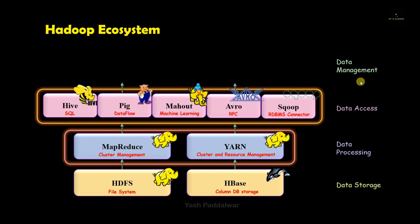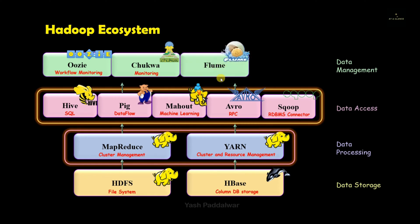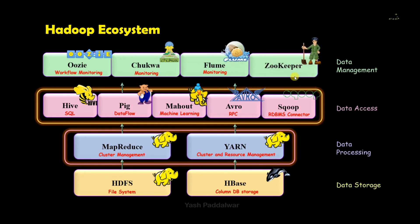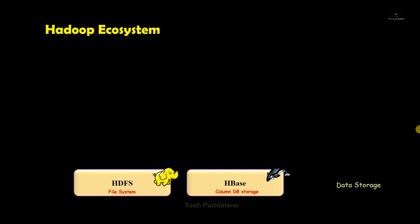After that we have the data management section, which again has some components. For example, Oozie, which does the work of workflow monitoring; Chukwa, which is used for monitoring; Flume, which is also used for monitoring; and Zookeeper, which does the job of management. Together all these components serve as an ecosystem that collectively helps to solve big data problems and makes tasks easier.